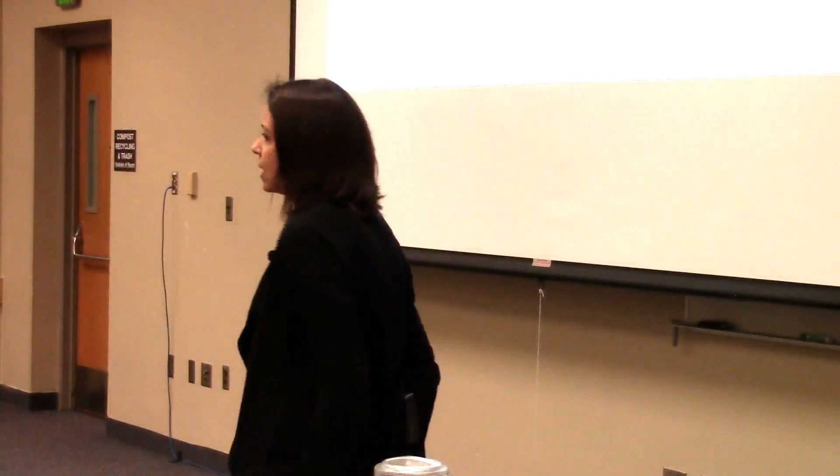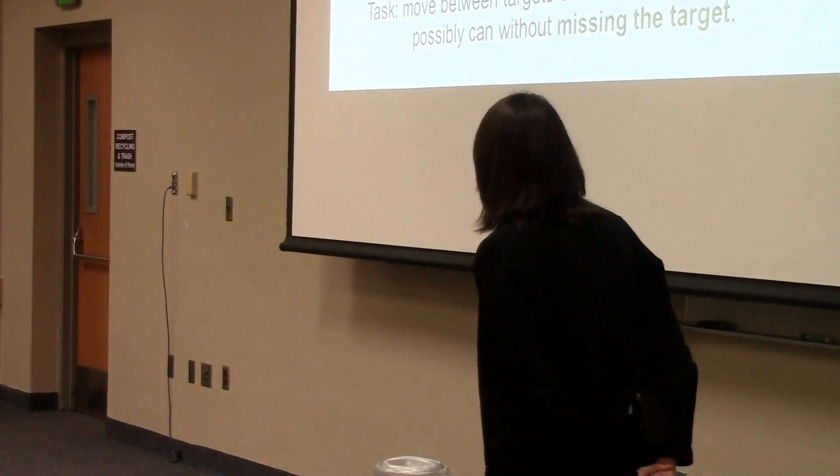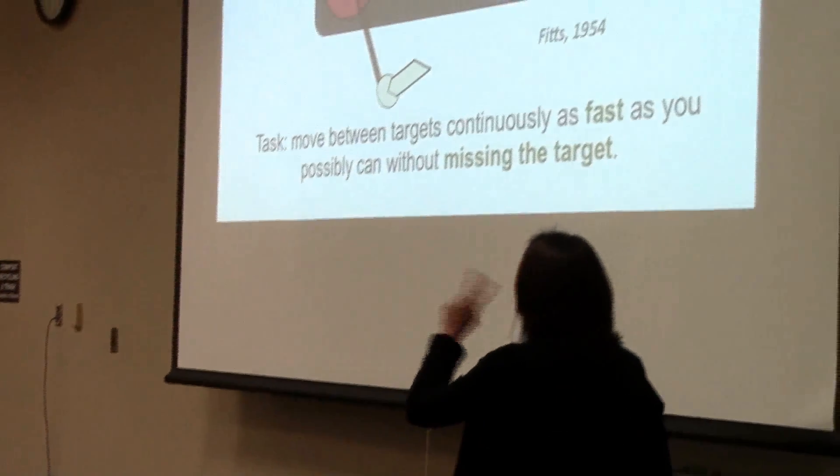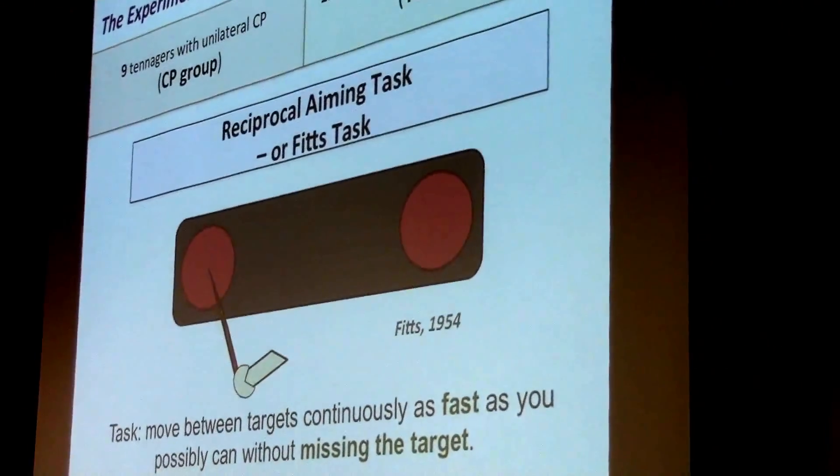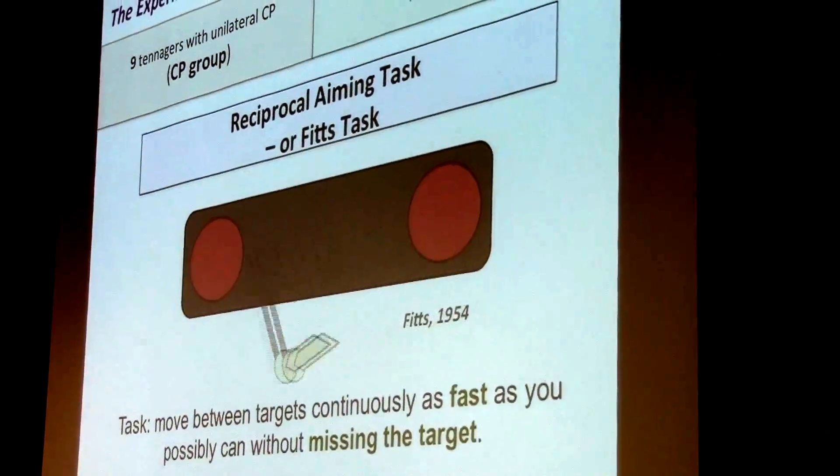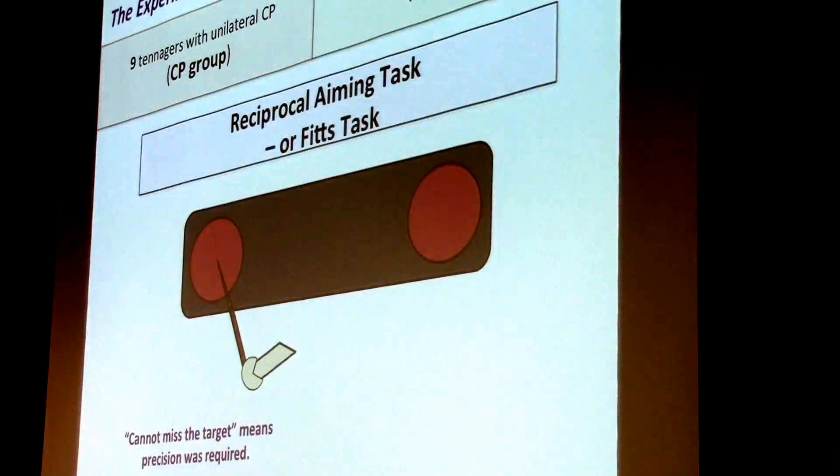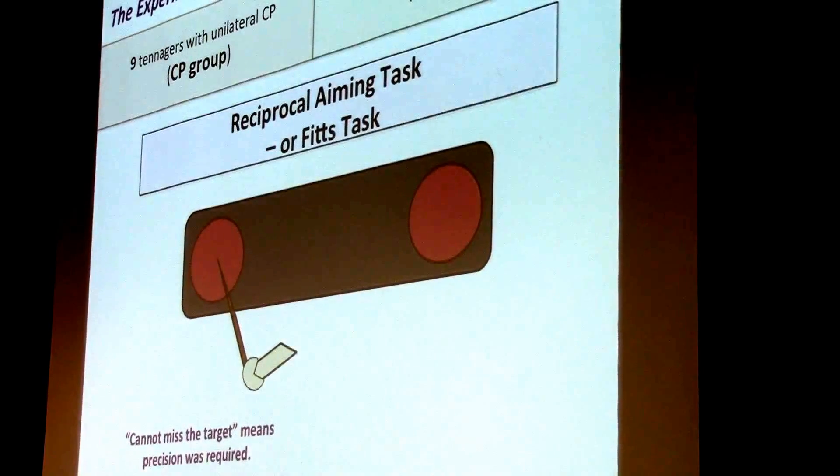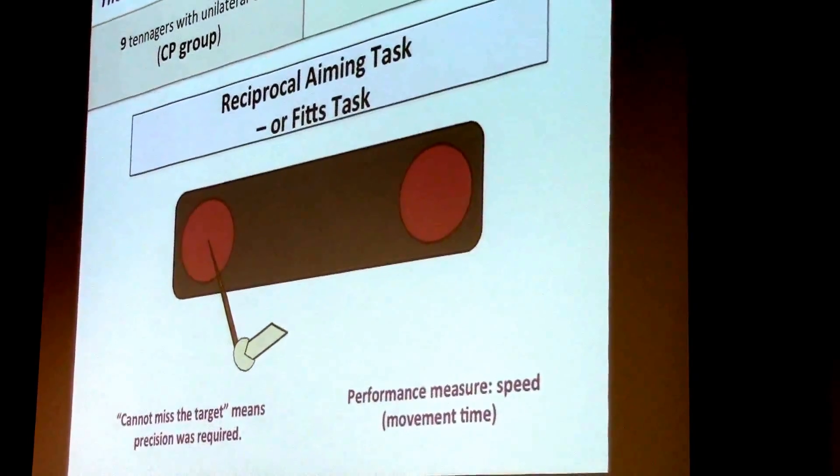So what was the experiment? We had nine teenagers with cerebral palsy and 11 teenagers with typical development and they were performing a reciprocal aiming task or Fitts task. So the task is to move between two targets continuously as fast as you possibly can without missing the target. Cannot miss the target means precision was required. If they made a mistake they had to start over. So we could use speed as the measure of performance.